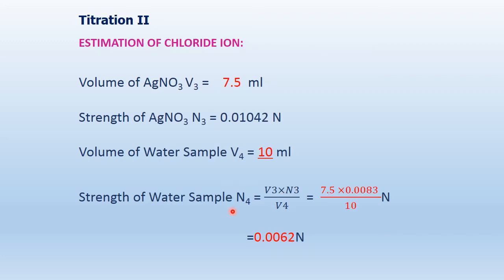Titration 2: estimation of chloride ions. Volume of AgNO₃ is V3 ml = 7.5 ml (this value differs for different samples, so calculate according to your value). Strength of AgNO₃ (N3) is the value obtained from Titration 1, which is 0.01042 Normal. Volume of water sample taken is 10 ml. Using V3N3 = V4N4, upon calculation we get the strength of the water sample as 0.0062 Normal.